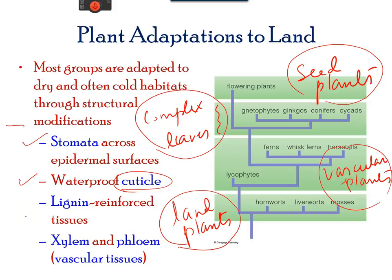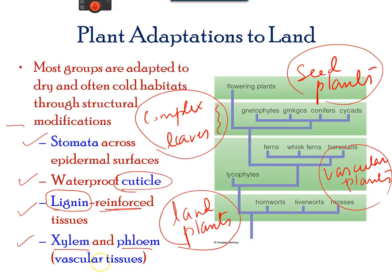Some plants, mainly woody plants, have a more complex organic molecule called lignin. It provides tissue support to the cell. Another adaptation seen only in vascular plants is the presence of xylem and flowing transport mechanisms.